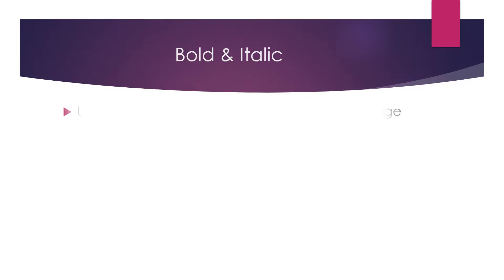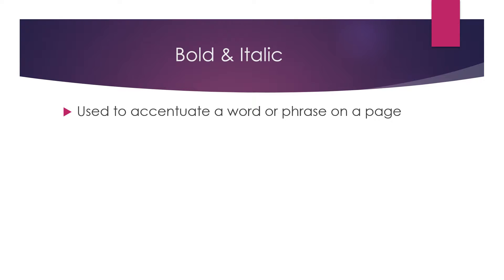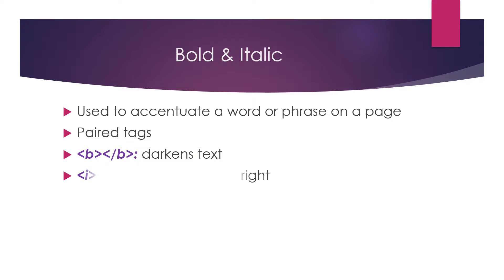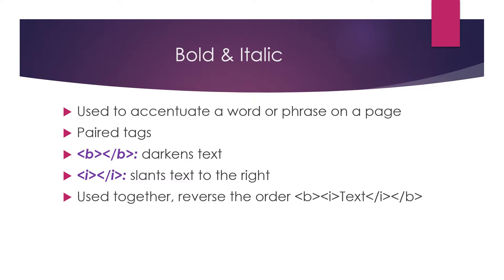Bold and italic are used to accentuate a word or phrase on a page. They are considered paired tags. Bold darkens text and italic slants text to the right. When you use them together, you reverse the order in your closing tags — so if you open bold then italic, you reverse the order at the end by putting italic first followed by bold.